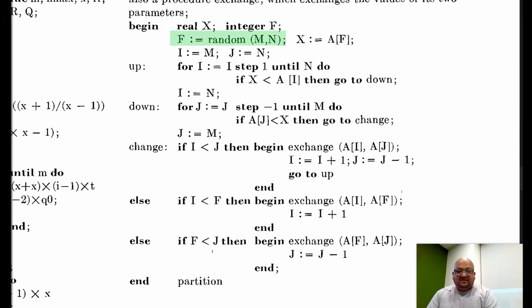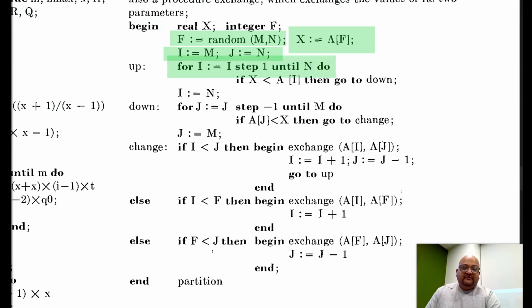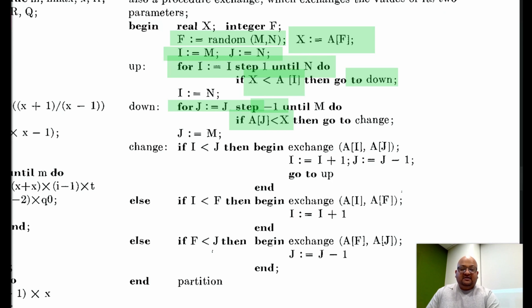We start by picking a random integer between the two indices m and n, and then x is the array element at that random position. At the beginning, i points to the lowest index and j points to the highest index. We start from the bottom of the array with i, and we keep incrementing i until we find an element that is greater than the random element we chose at the beginning. If that happens, we then start from the top of the array and increment downwards, keeping going until we find an element that is less than the random element we picked at the beginning.